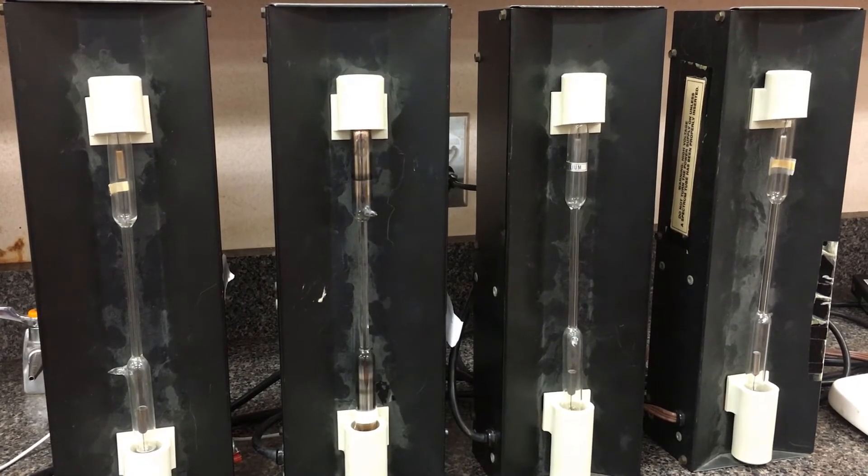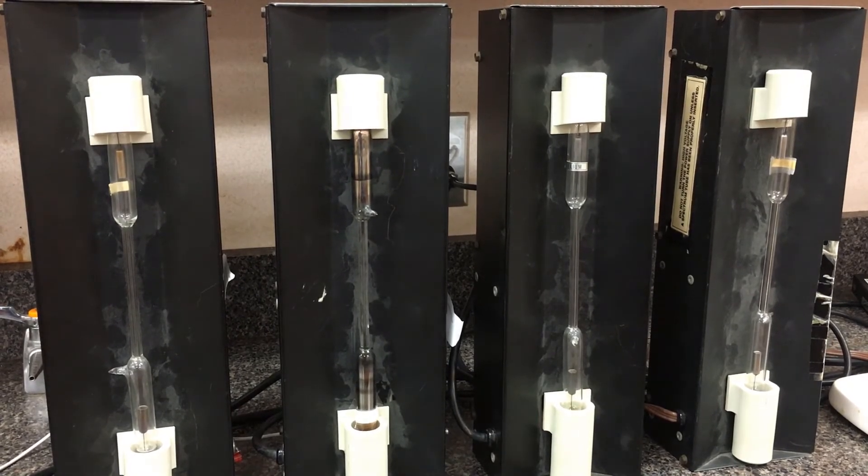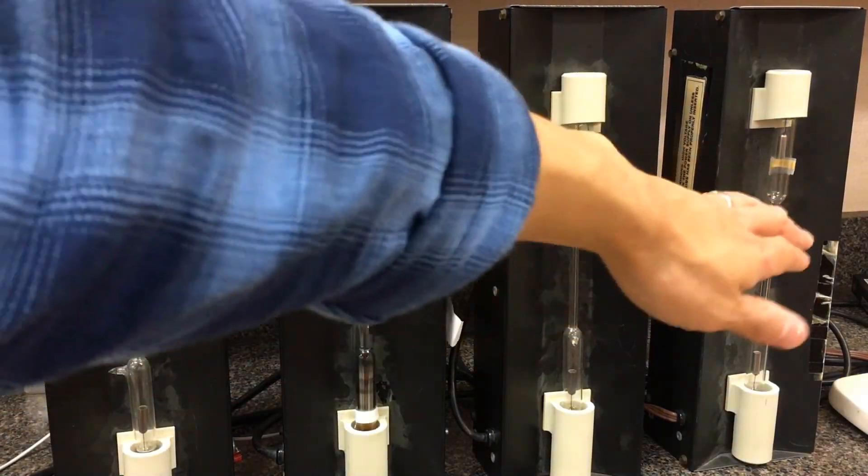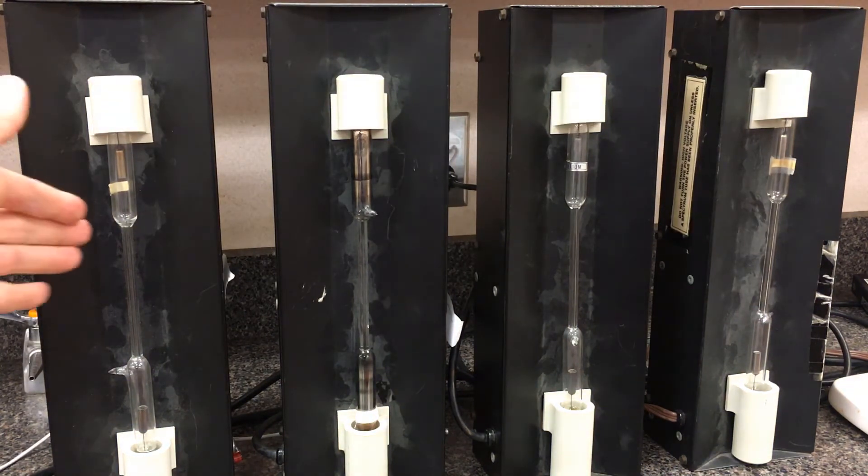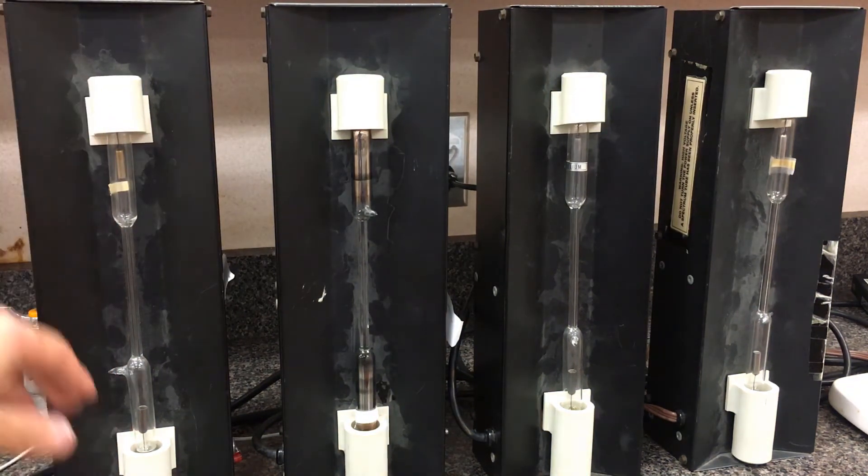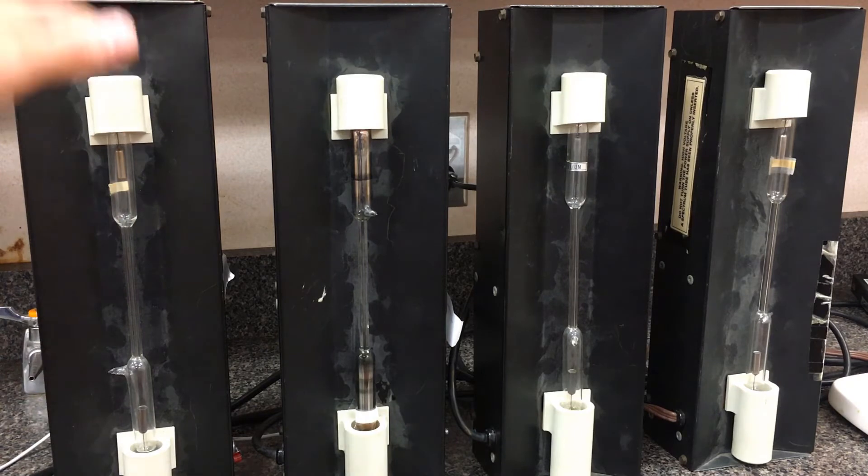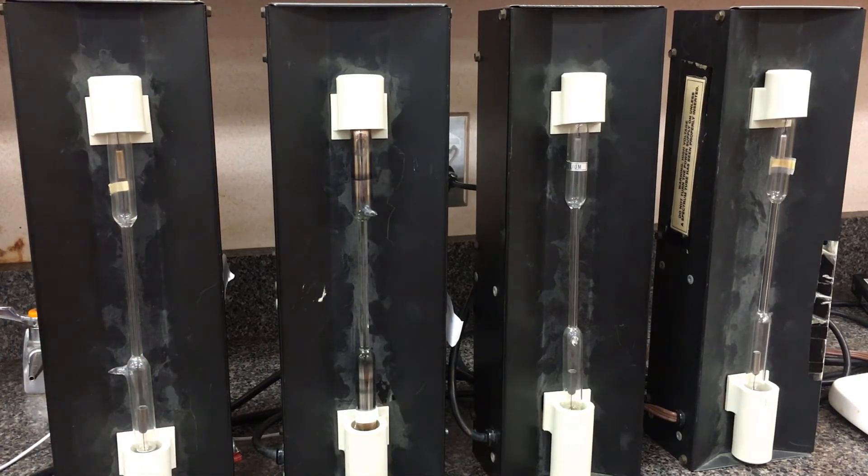All right, so we're going to be investigating four different elements. Going from left to right, we have argon, hydrogen, helium, and neon. Those gases are currently filling these gas discharge tubes. There are two electrodes that are going to provide a voltage top and bottom. When we flip the switch, the electricity is going to excite a bunch of electrons.